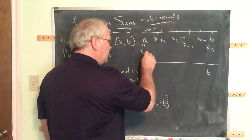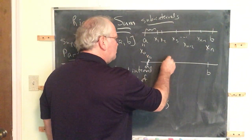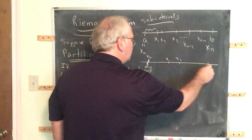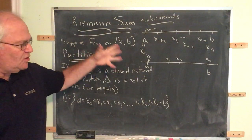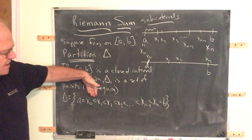If all you're after is a partition, you must include x0, so here's x0, maybe here's x1, maybe there's x2, and maybe that's xn. There, that's my partition.